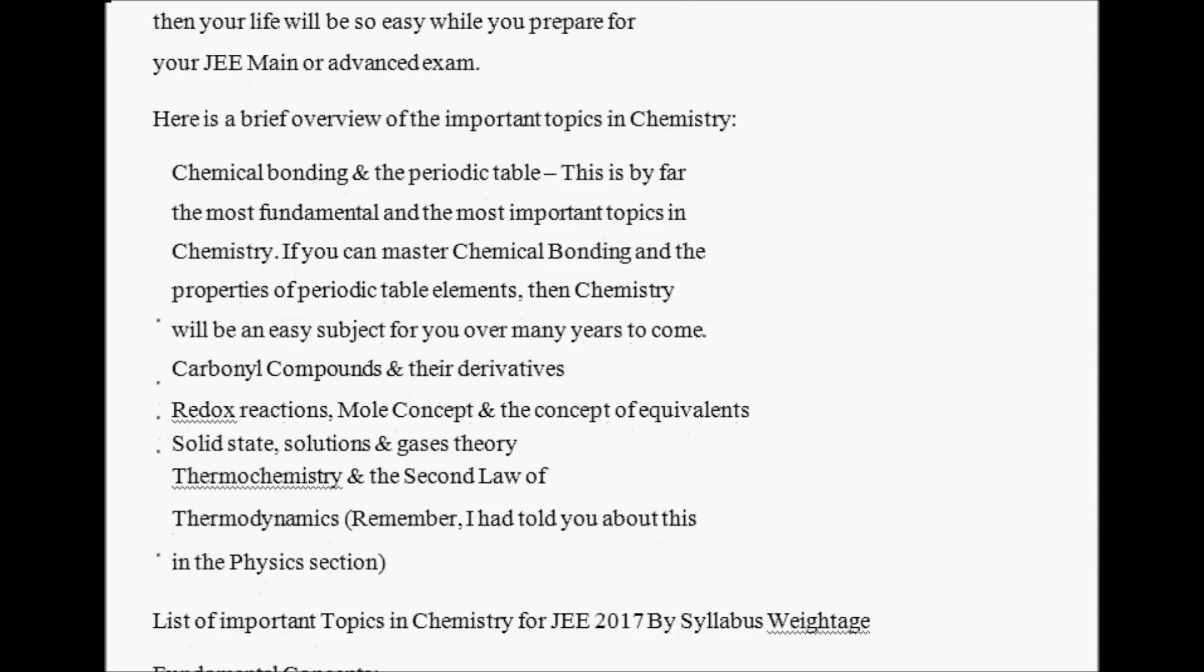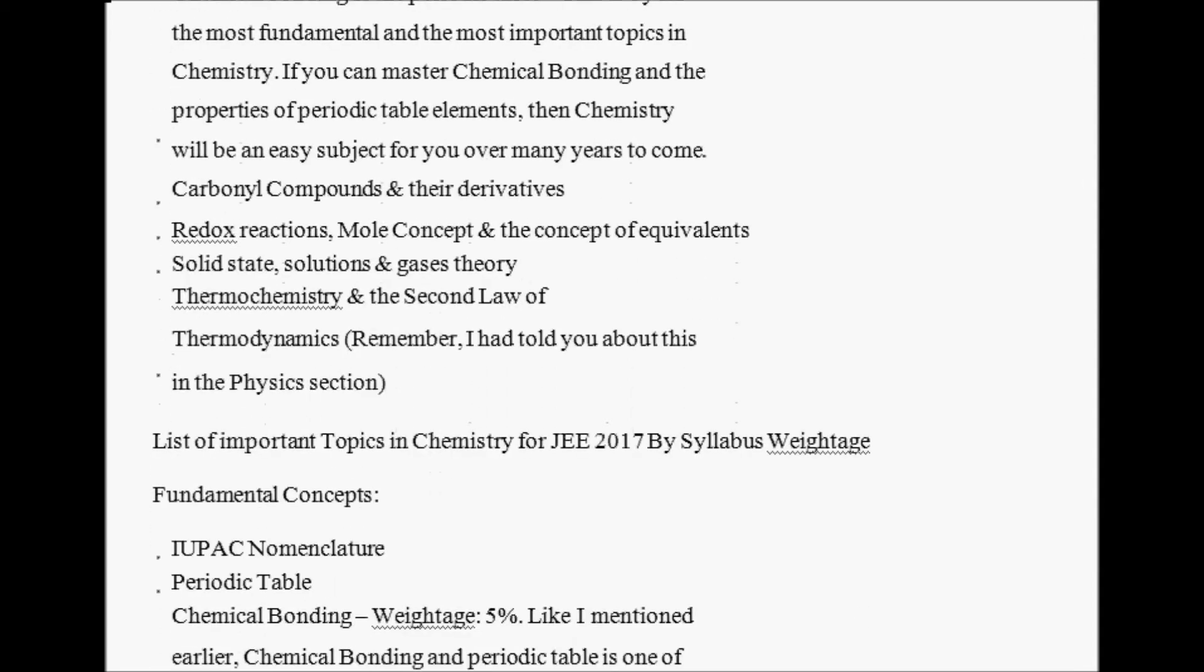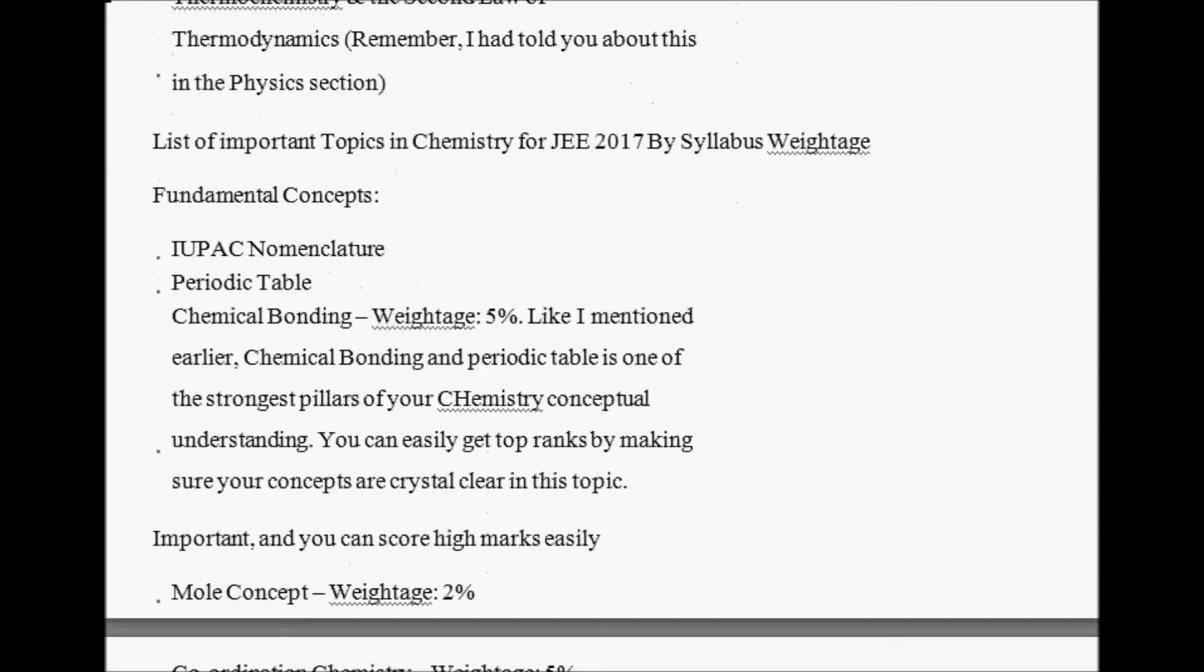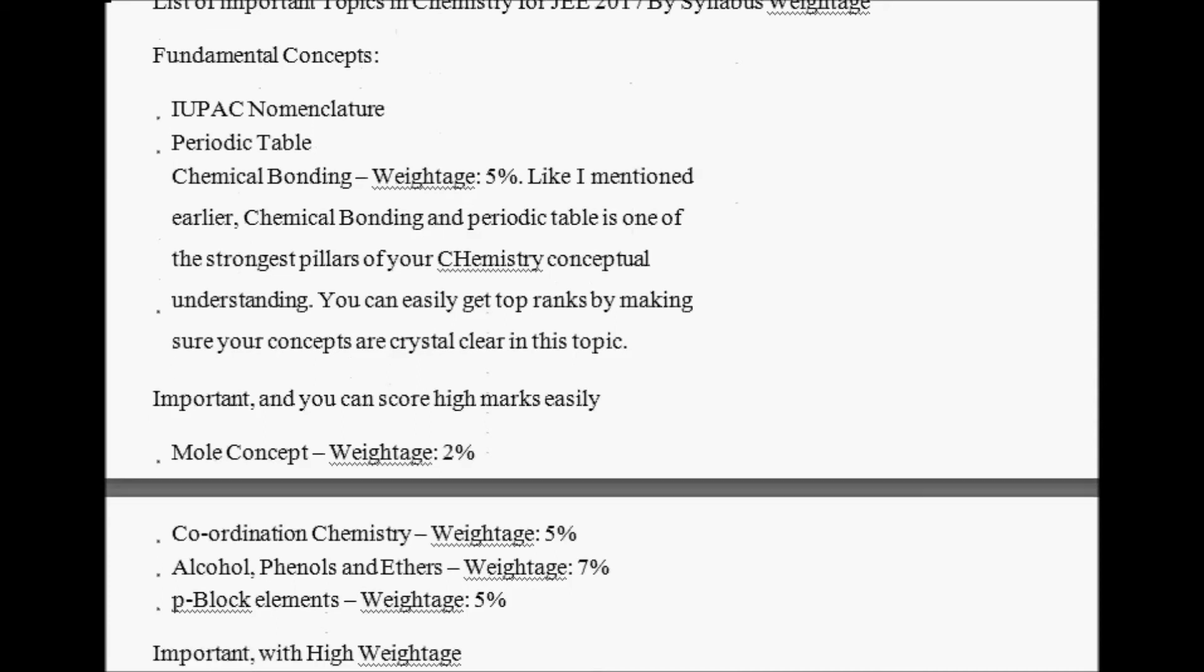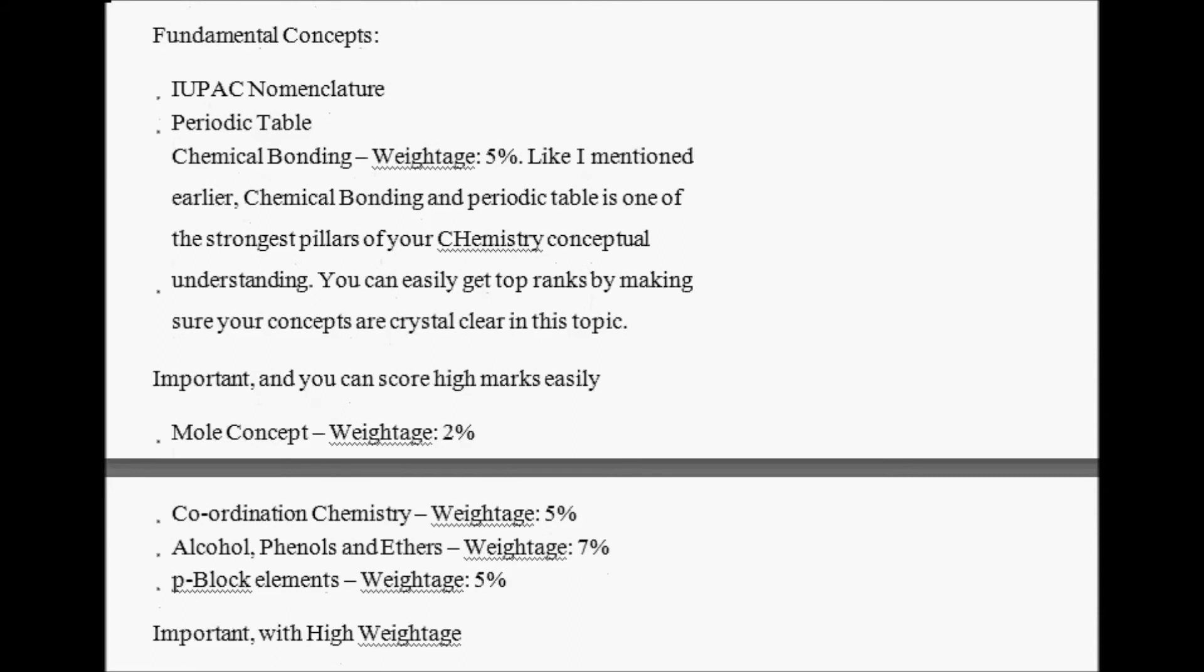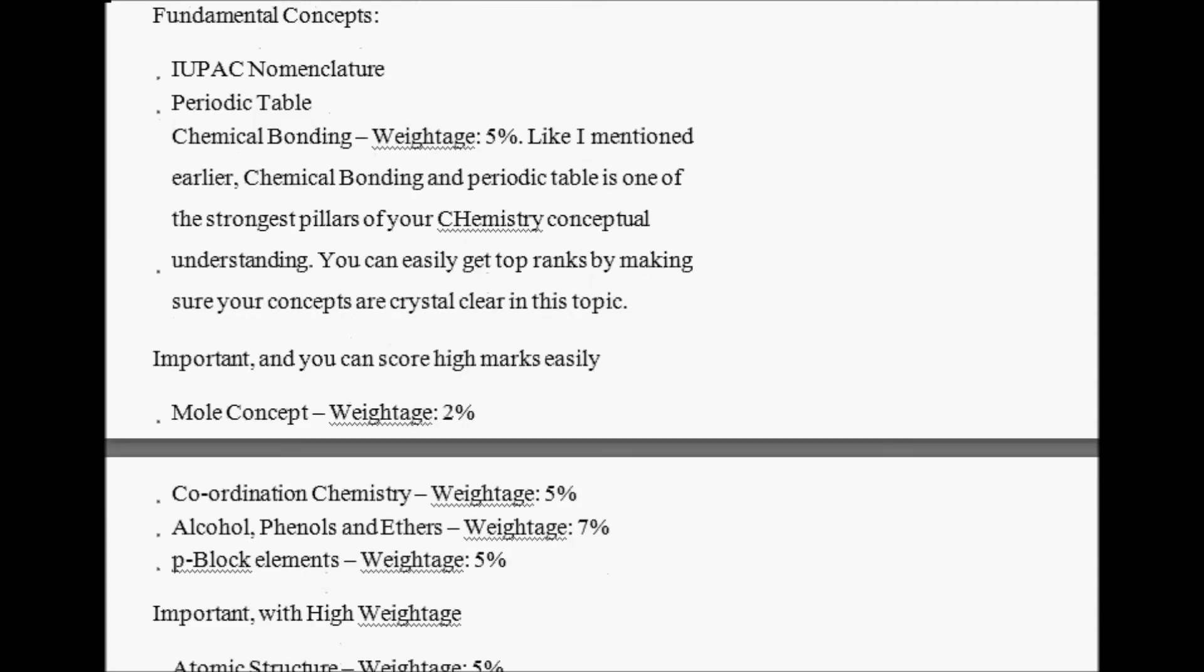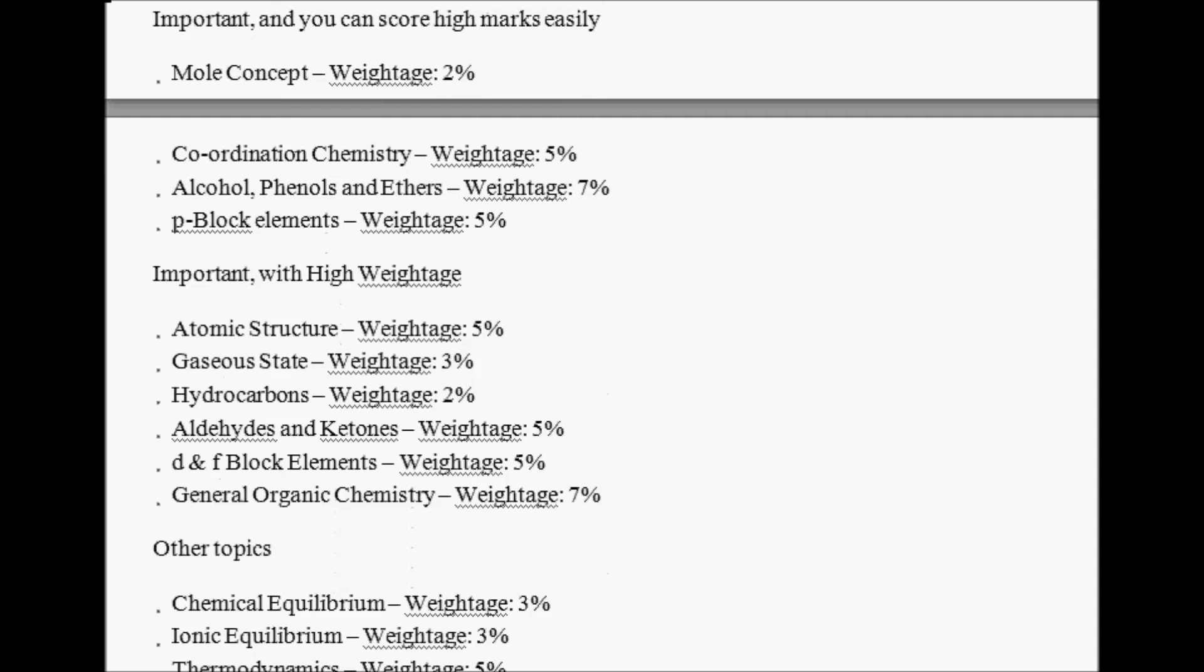Here is a brief overview of important topics in Chemistry: Chemical Bonding and Periodic Table - this is by far the most fundamental and most important topic in Chemistry. If you can master chemical bonding and the periodic table of elements, then chemistry will be an easy subject for you for many years to come. Carbonyl Compounds and Derivatives, Redox Reactions, Mole Concept and Equivalent, Qualitative State, Solution and Gas Laws, Thermochemistry and Second Law of Thermodynamics. List of important topics in Chemistry 2017-18 by syllabus: IUPAC Naming, Periodic Table, Chemical Bonding. Small concepts - weightage 2%. Coordination Chemistry - around 5%. Alcohols, Phenols and Ethers - weightage 7%. P-block Elements - 5%.